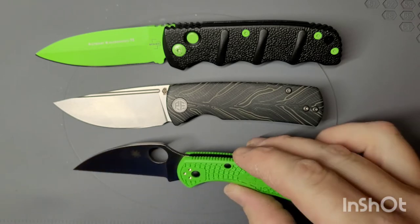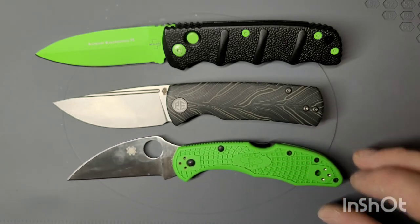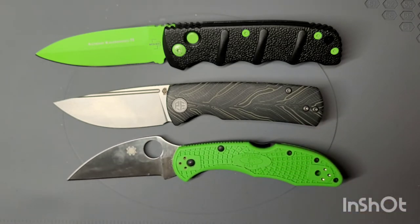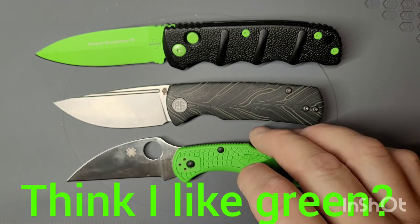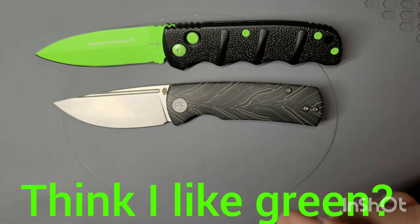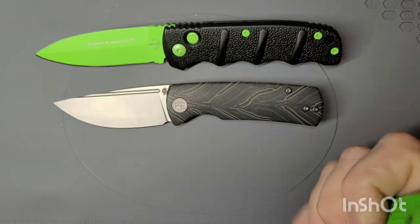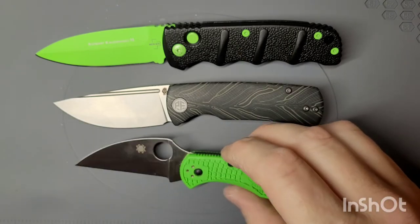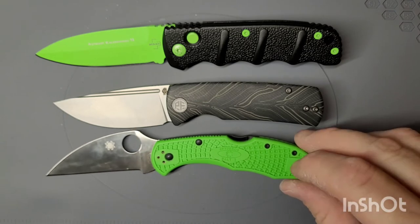Up against the Spyderco Salt 2 with a Wardenclyffe and LC200N steel. Which is basically the same size as a Delica. For those of you that have a Delica.